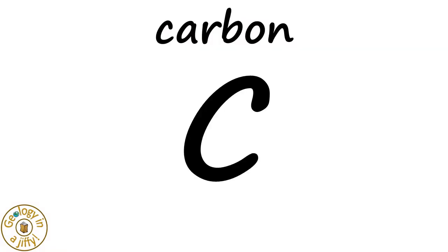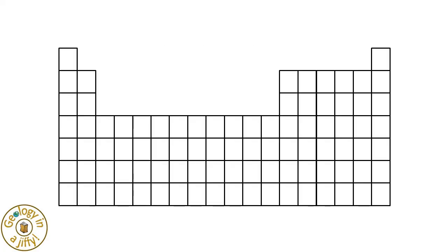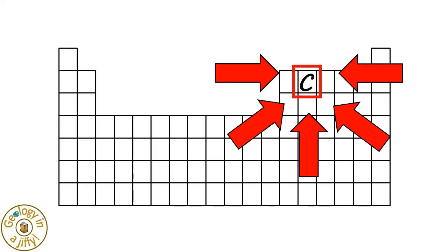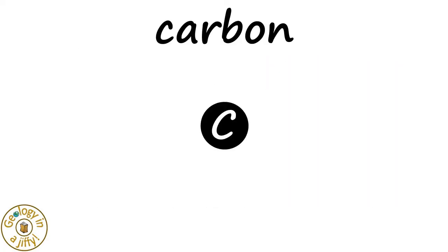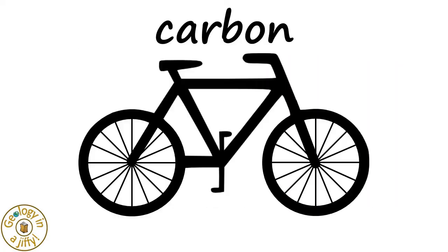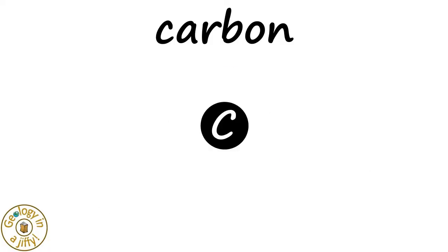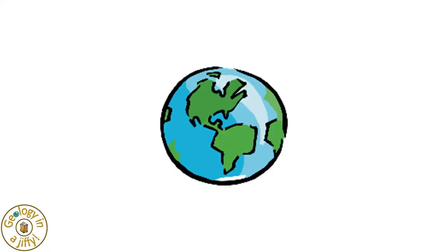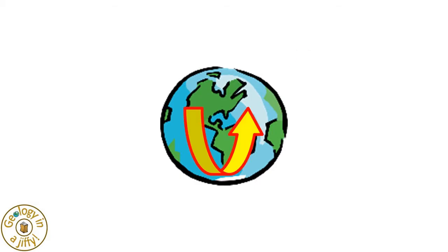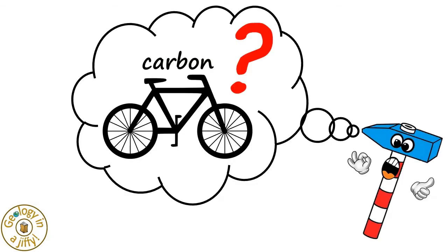Carbon, having the symbol capital C, is found here on the periodic table, it being modelled as a black ball. The carbon cycle is a process that cycles carbon about our planet Earth, into it, out of it, and within it. But how can we start explaining the carbon cycle?